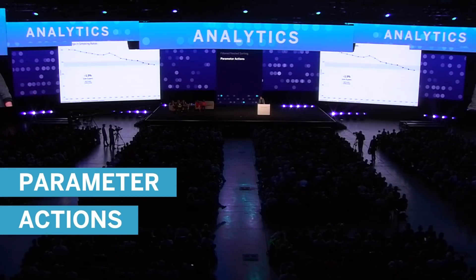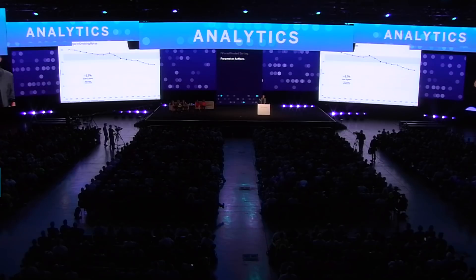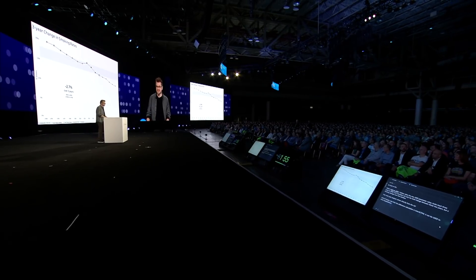That marks value is placed into the parameter just as if I had typed it in by hand. When I click on 2005, Tableau takes that new 2005 parameter value, looks back three years to 2002, and calculates not only the total change between those two years but a moving average over that window. Year-over-year analysis driven directly from the viz.